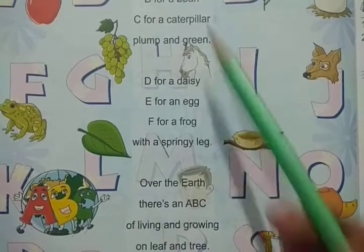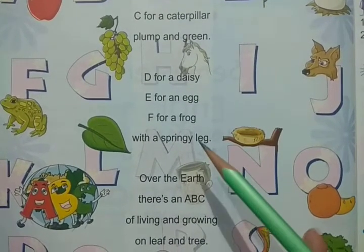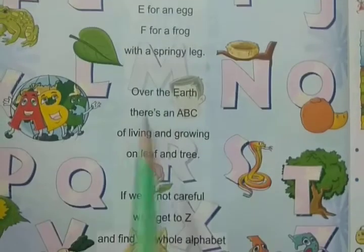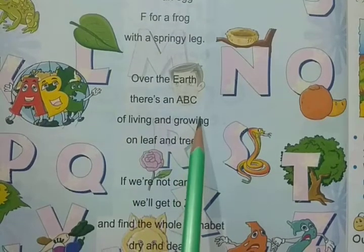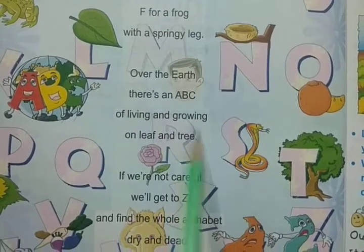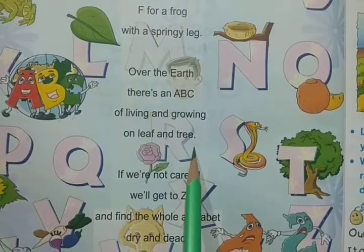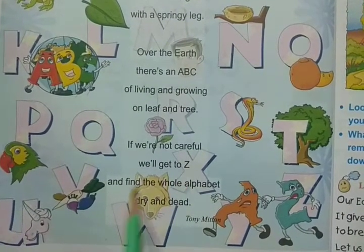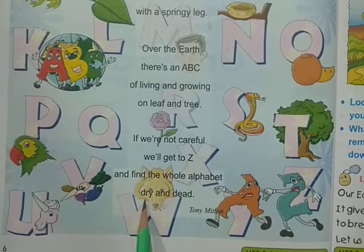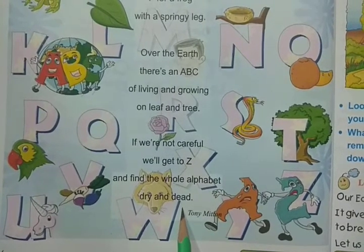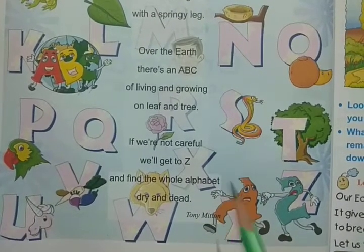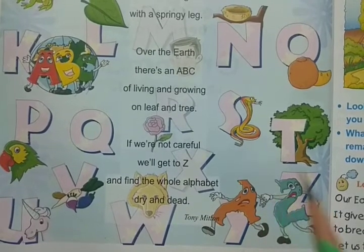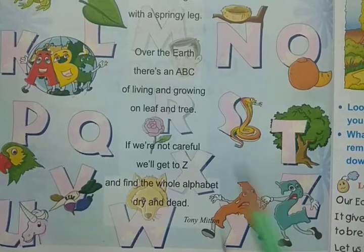Like this, in the first and second stanza, the poet is explaining. Let us see the third and fourth stanza: Over the earth there is an ABC of living and growing on leaf and tree. If you are not careful, we will get to Z and find the whole alphabet dry and dead. So it means the poet is trying to explain to us that earth is full of plants, trees and animals.